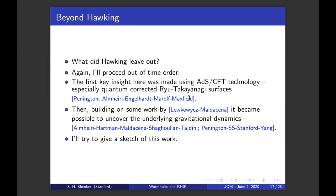Well, again, I'll proceed out of time order. The first key insight here was made using some AdS CFT technology, specifically quantum corrected Ryu Takayanagi surfaces. So in a couple of remarkable papers, one due to Pennington and one due to Almheiri, Engelhardt, Marolf and Maxfield, they saw a key ingredient for explaining this. Then building on some work of Lukovic and Maldacena, it became possible to uncover the underlying gravitational dynamics. And there are two papers about this, one that's often called the East Coast paper and one the West Coast paper. And I'll try to give a sketch of this work here.